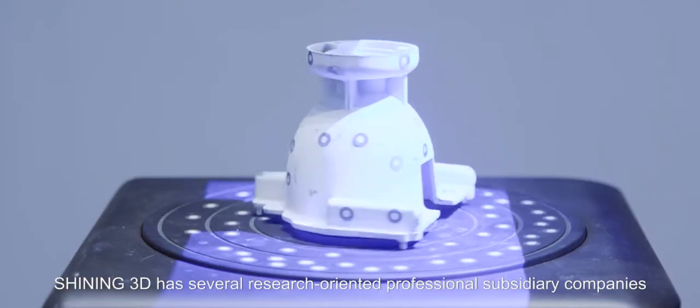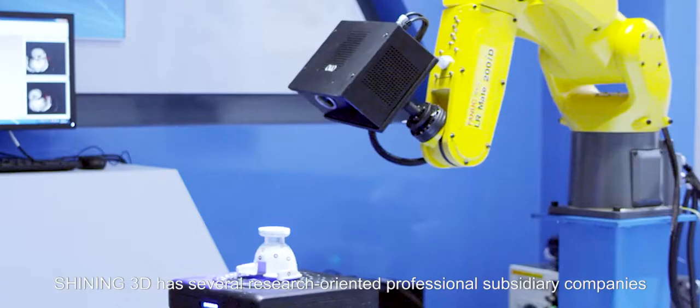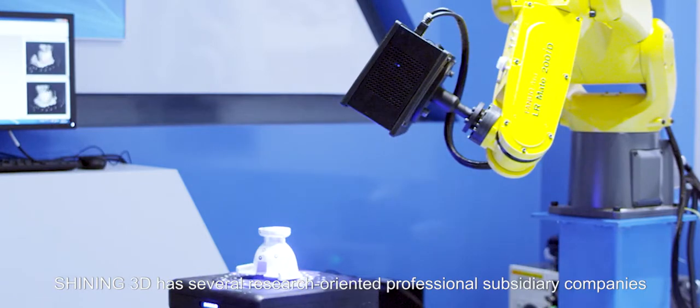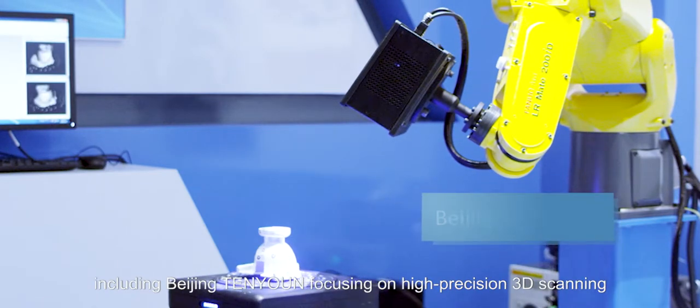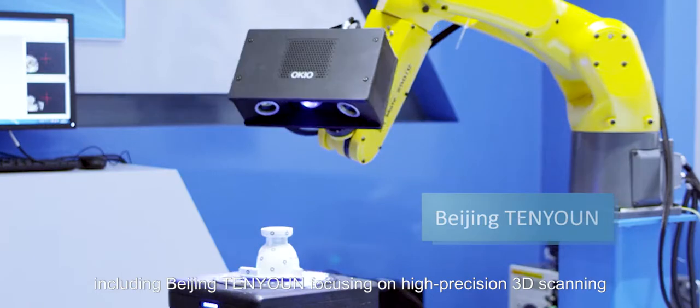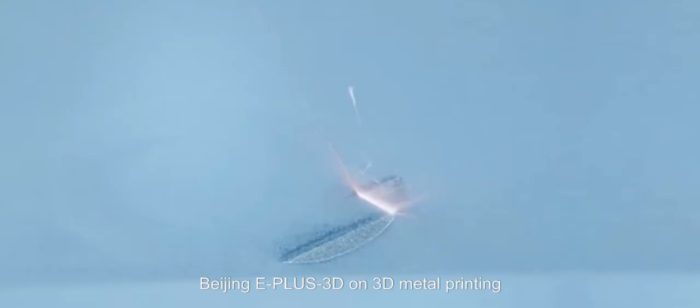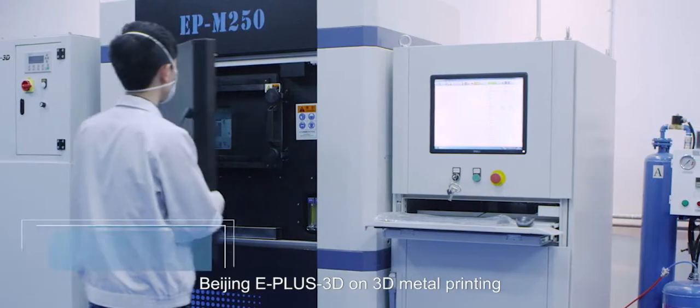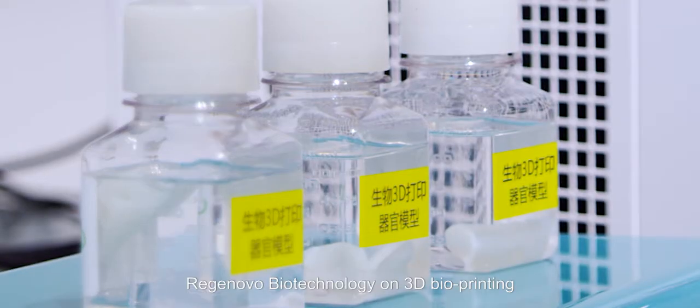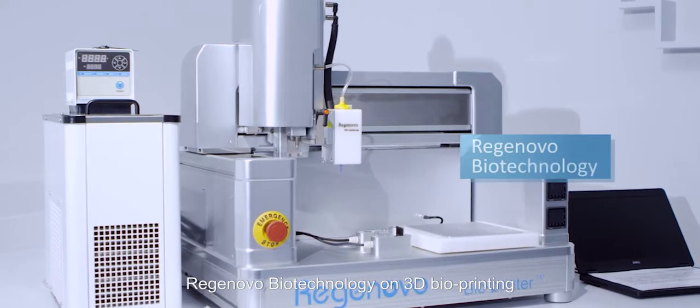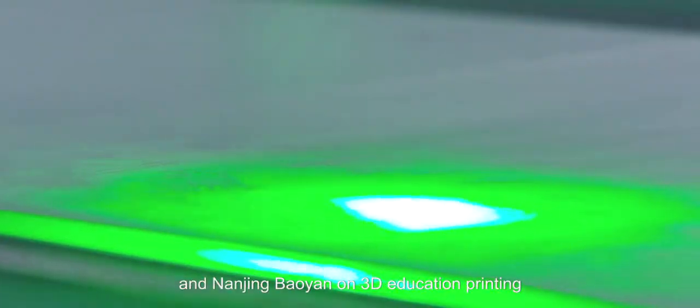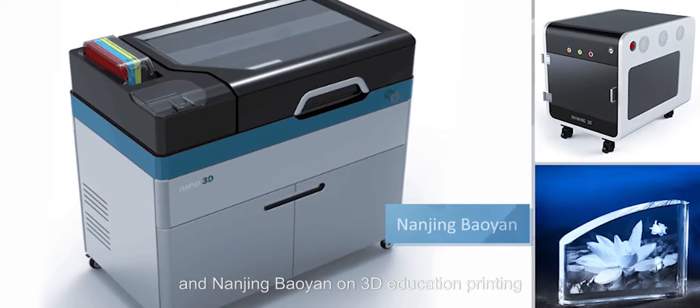Shining3D has several research-oriented professional subsidiary companies, including Beijing Tenyun focusing on high-precision 3D scanning, Beijing E Plus 3D on 3D metal printing, Reginovo Biotechnology on 3D bioprinting, and Nanjing Baoyan on 3D education printing.